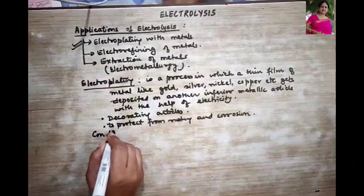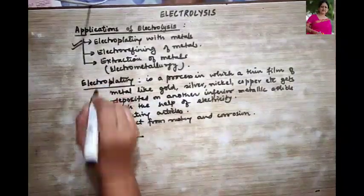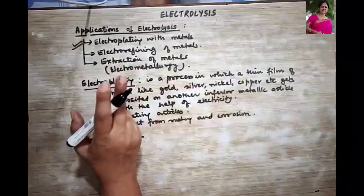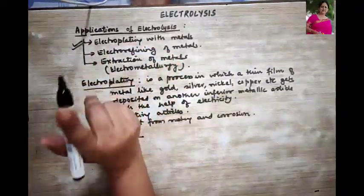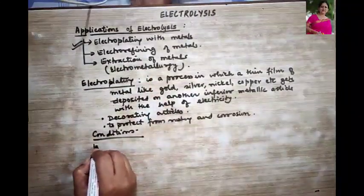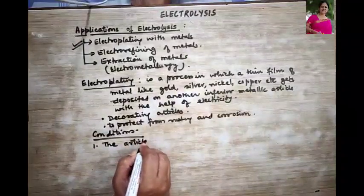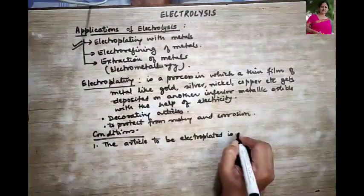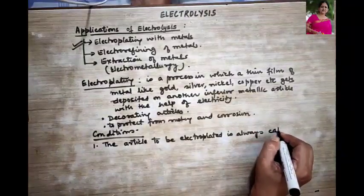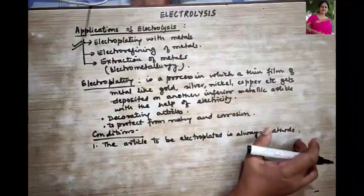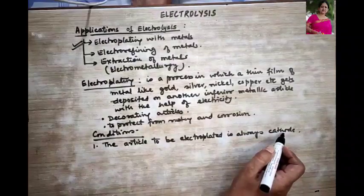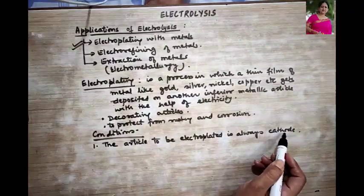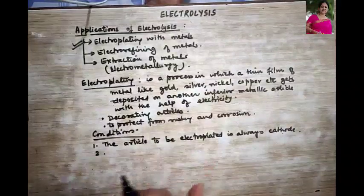Now let us understand the conditions for electroplating — this is very important. If you understand the conditions, electroplating will be very simple. Remember: the article to be electroplated should always be your cathode. Why cathode? Because metal is always deposited at the cathode by the gain of electrons.